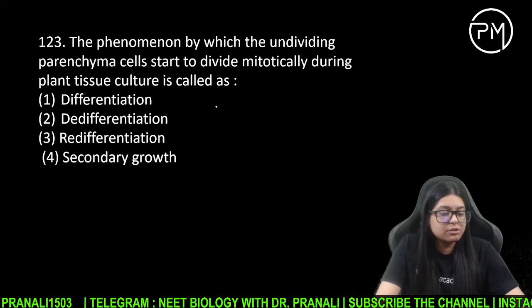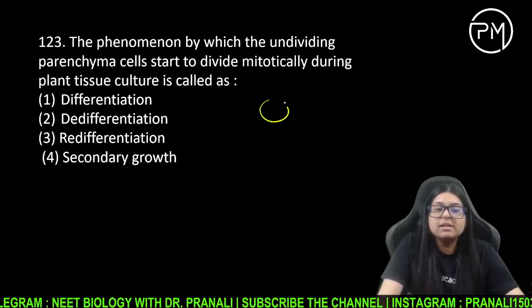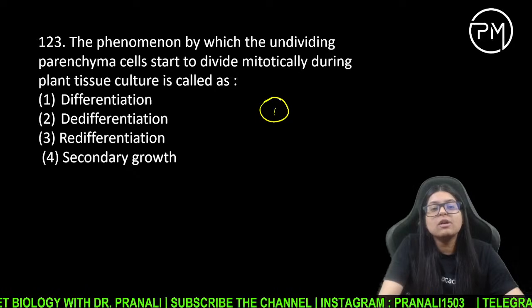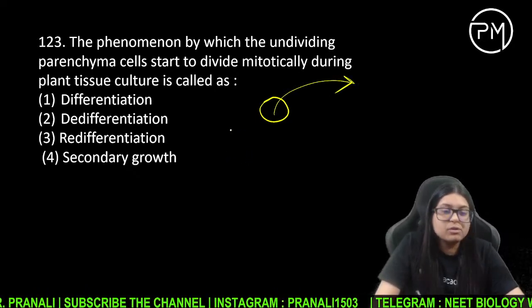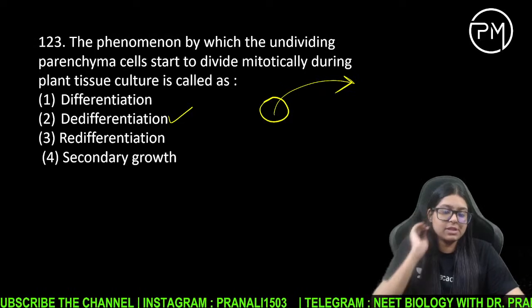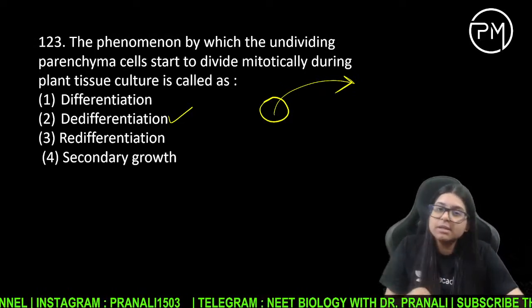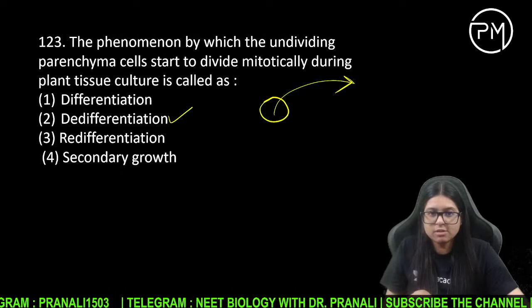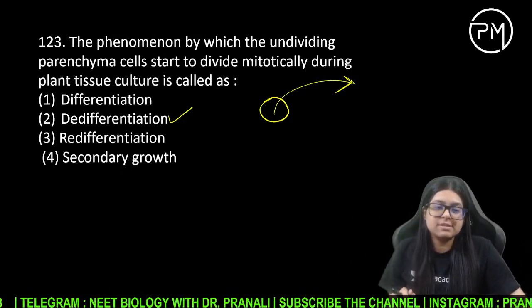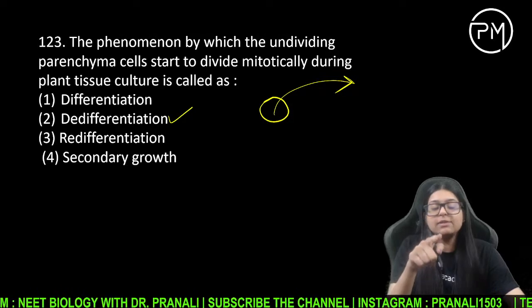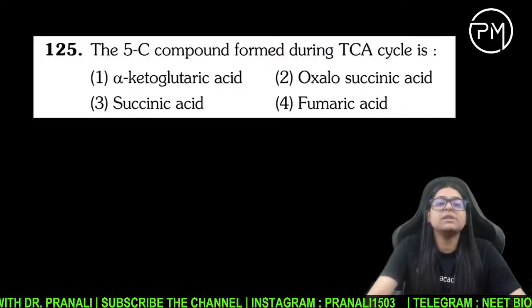Question number 123 pe aate hain. Jo cell divide nahi kar rahi hai, jo mature hai, use de-differentiation mein jaata hai — matlab abhi divide kar rahi thi, ab divide karna band kar diya, mature ho gayi — toh differentiation. Phir se divide karna shuru kar diya — toh re-differentiation. Phir se band kar diya — toh de-differentiation.